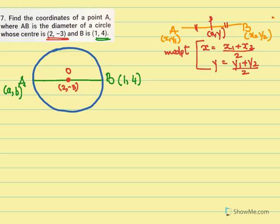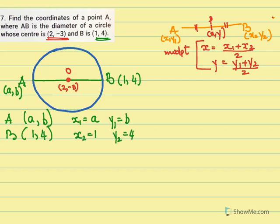Now for point A, we have taken it as (a, b). So x1 = a and y1 = b. For point B, the coordinates are (1, 4), so x2 = 1 and y2 = 4. The midpoint O is given as (2, -3), so x = 2 and y = -3.